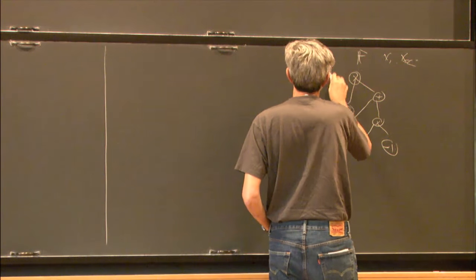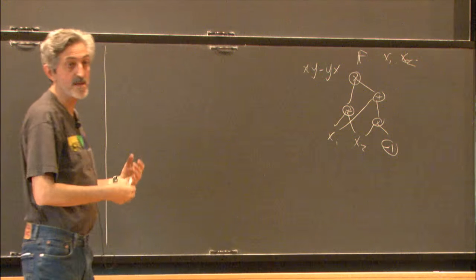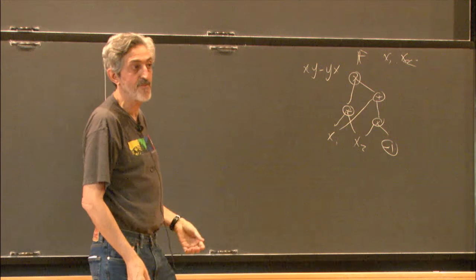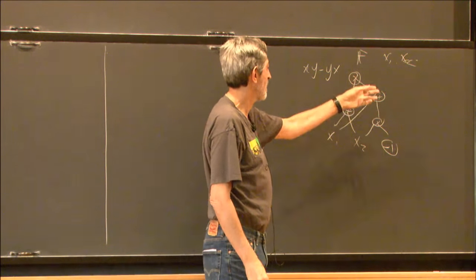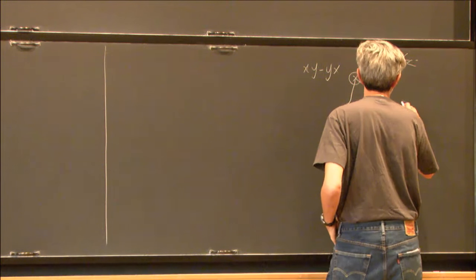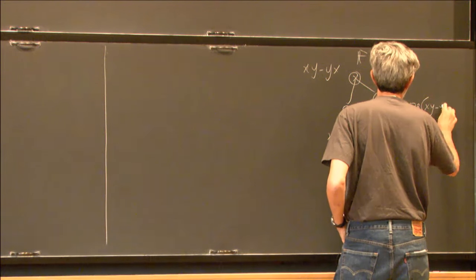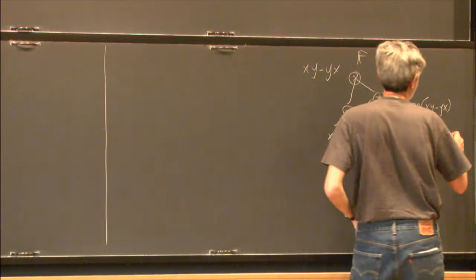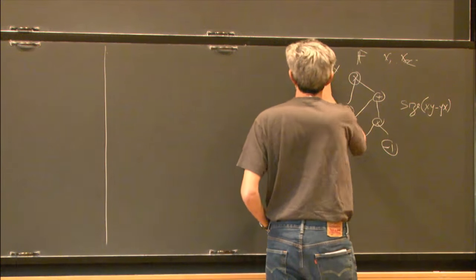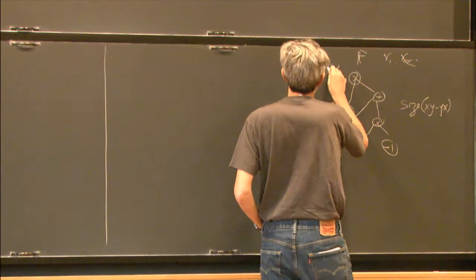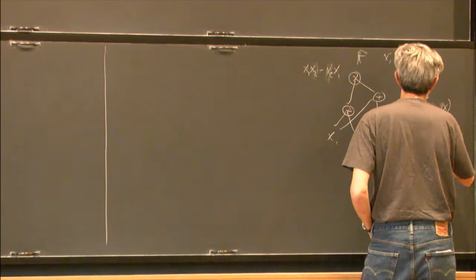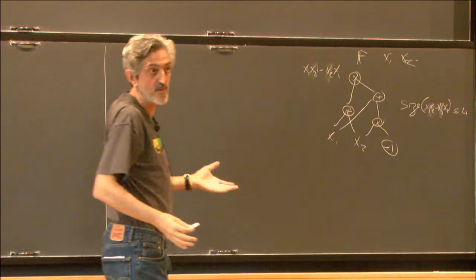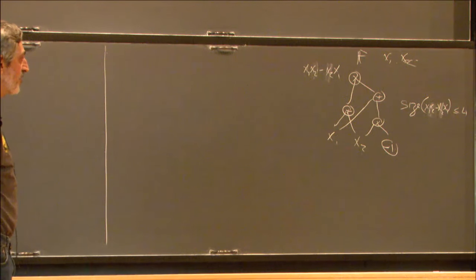For example, you start from X1 and X2, maybe use constants like minus one, and then add and multiply the results. What you get here is XY minus YX. That's a circuit for this polynomial. You can ask about the smallest size — the minimum number of operations you need to compute a polynomial like that.